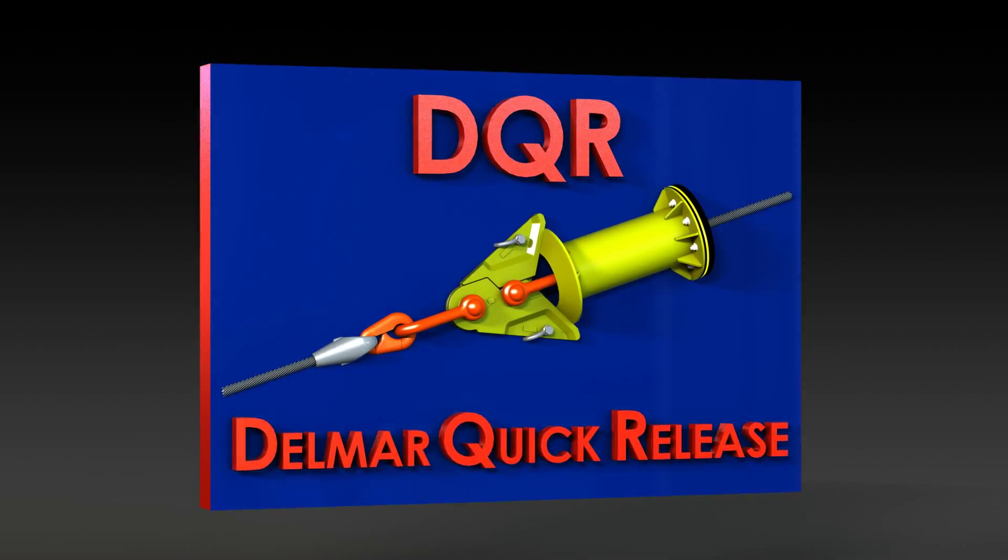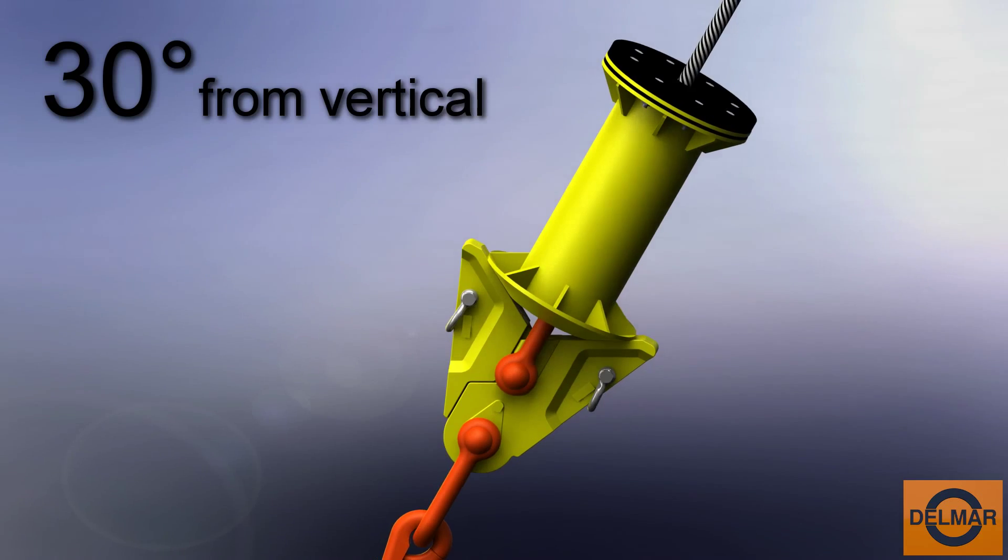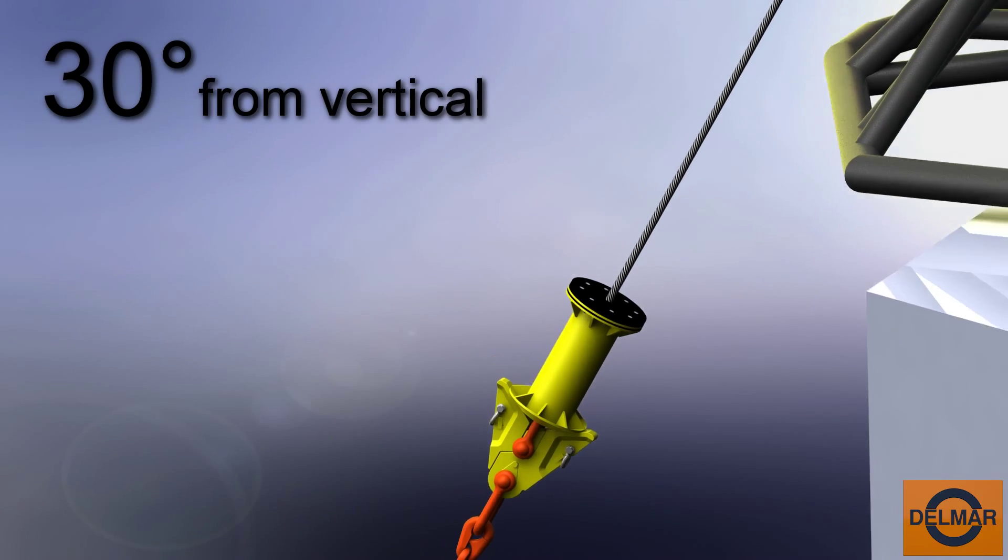The Delmar Quick Release is a novel tool that allows a rig to safely and efficiently release from its mooring system in the event of an emergency. It works like this.